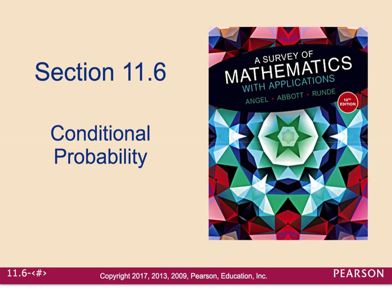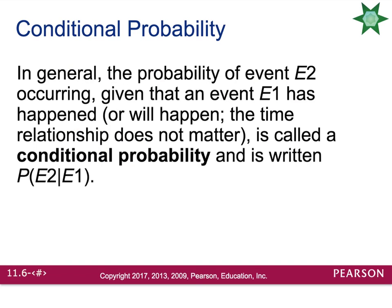Section 11.6 is called conditional probability, and this is going to be an extension of what we just completed. The probability of event 2 occurring given that event 1 has happened or will happen — the time relationship does not matter — is called a conditional probability, written as P(event 2 | event 1). That vertical bar is read as 'given.' When you do this type of probability, you need to assume that event 1 has already happened. Based on what has already occurred, what's the probability of the second event happening?